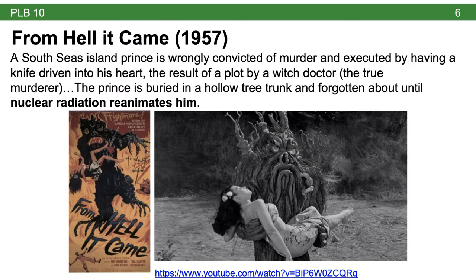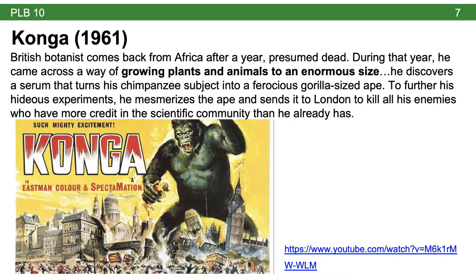Konga is the next story, from 1961. A British botanist returns from Africa after a year, having been presumed dead and having lost scientific credibility. But during his time abroad he learned ways to grow plants and animals to giant size. He develops a serum, injects it into his pet chimpanzee Konga, and Konga grows to giant gorilla size. He then mesmerizes Konga into killing all of his enemies who scientifically discredited him.